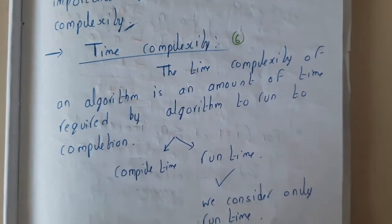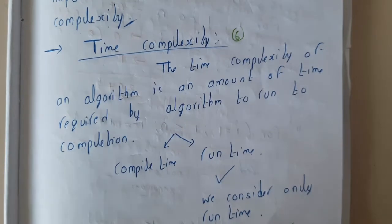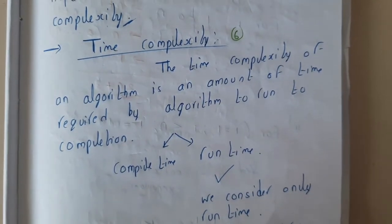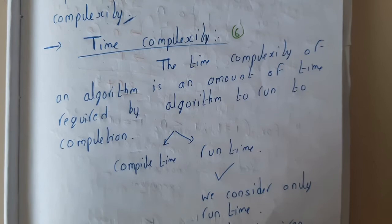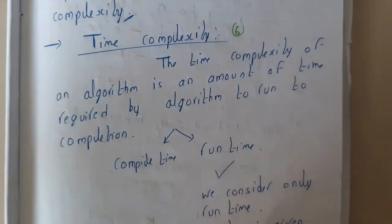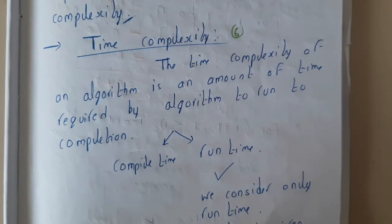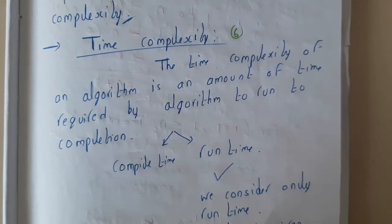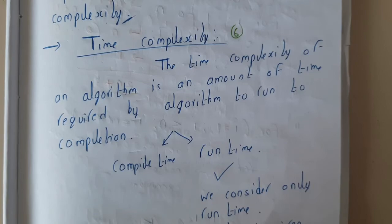Hello guys, we are back with our next lecture. In this lecture, let us go through time complexity. We won't be discussing asymptotic notations here — those will be covered in further lectures. This is just an introduction. In our previous lecture we discussed space complexity, and similarly we will now discuss time complexity — how small algorithms run and how much time they take.